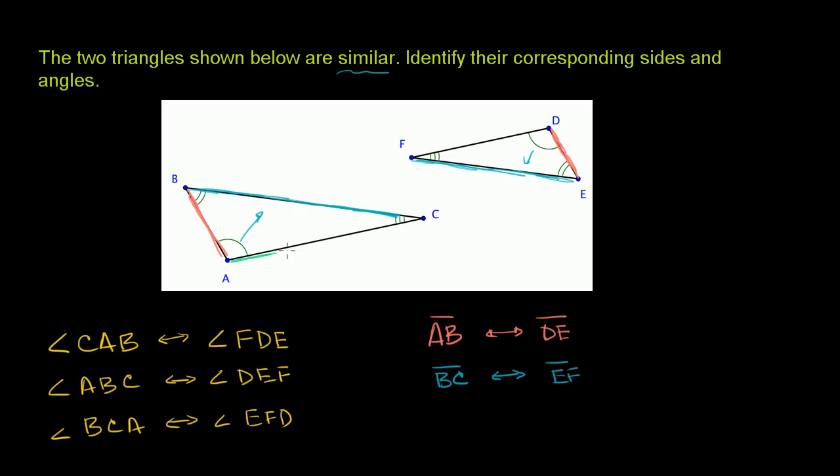If we look at this side right over here, AC, it corresponds to, well it's the only one that's left, but it's also, AC is opposite that two bar angle. Opposite that two bar angle is right over here. It corresponds to side DF.